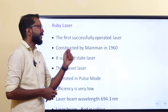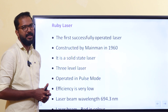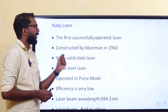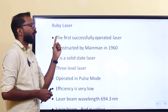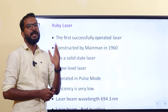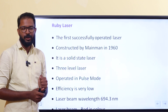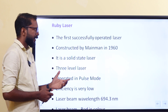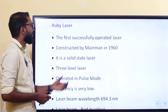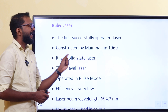The first successfully operated laser is the ruby laser. This was constructed by Maiman in 1960.